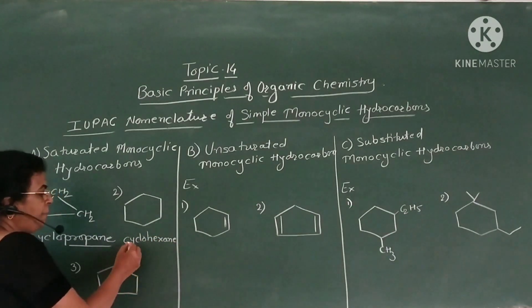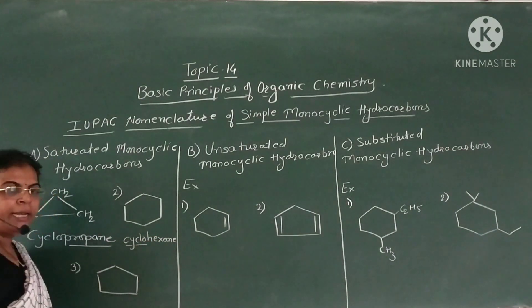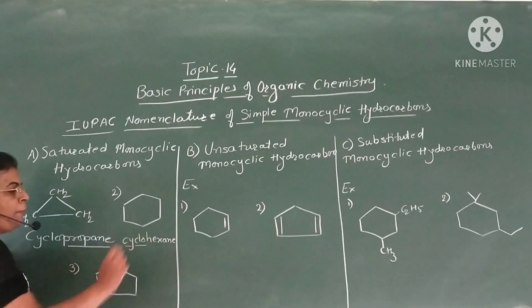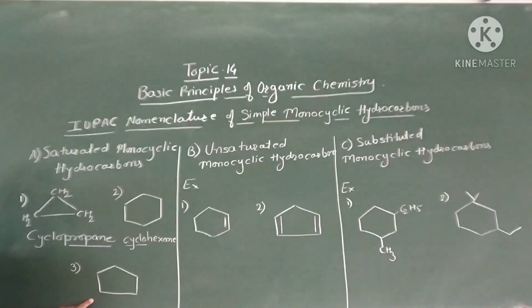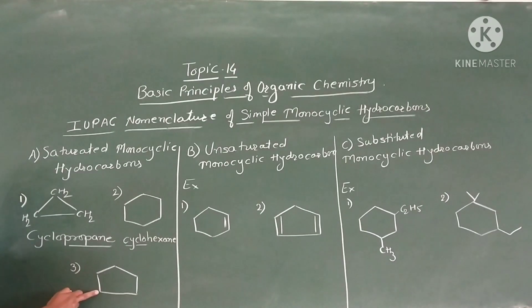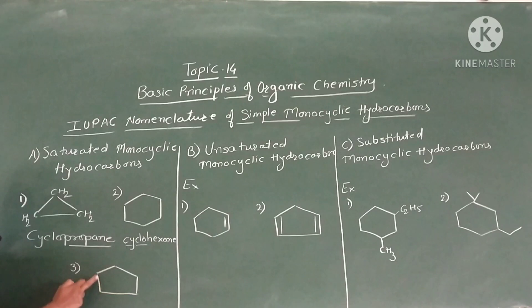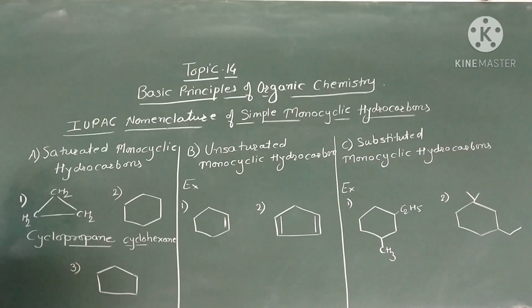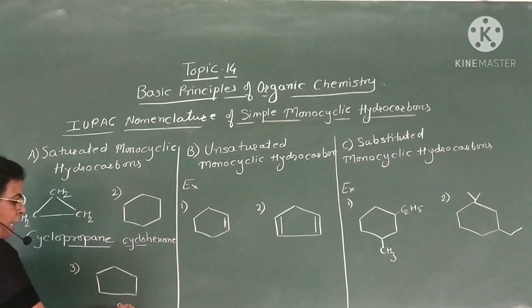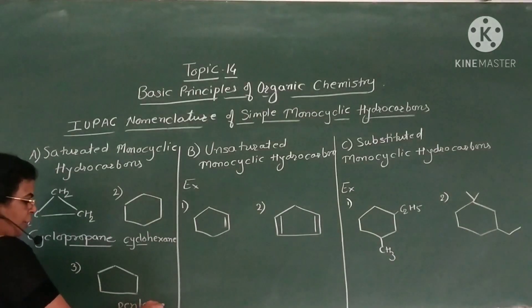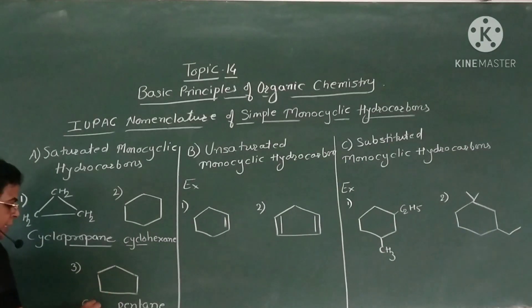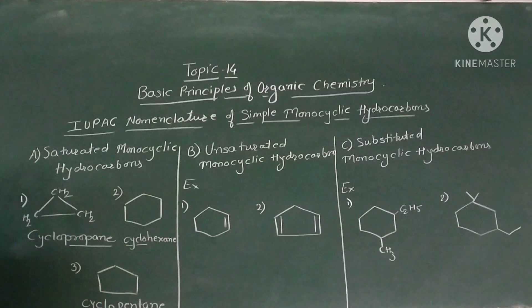The prefix 'cyclo' is added before the name of the alkane. Now in this case there are five carbon atoms in a cyclic ring — CH2 groups at positions 1 through 5. Therefore the parent is pentane, but since they are in a ring structure it becomes cyclopentane. These are the three examples of saturated monocyclic hydrocarbons.